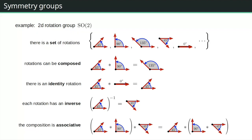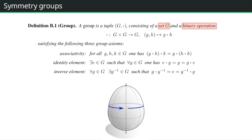SO(2) consists of 2×2 matrices with determinant +1 that are orthogonal. If you allowed determinant ±1 you would also include reflections; you could also consider scaling, shearing, or the general linear group. That was just a visual example as intuition. Now let's look at the abstract definition of a symmetry group.